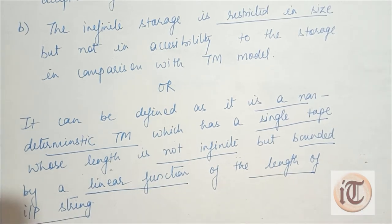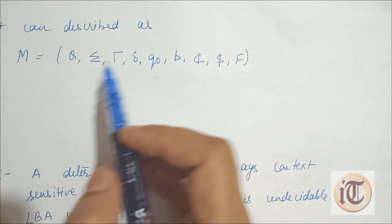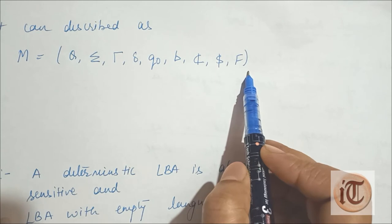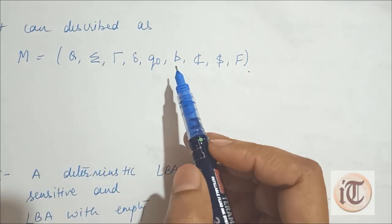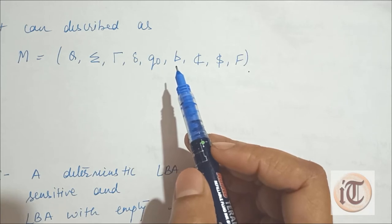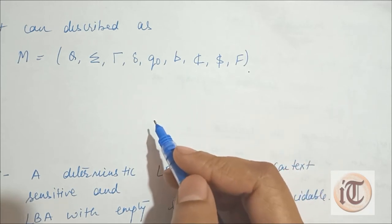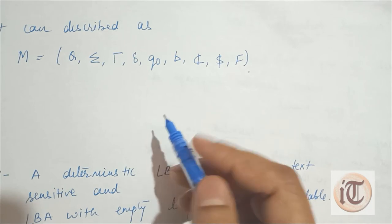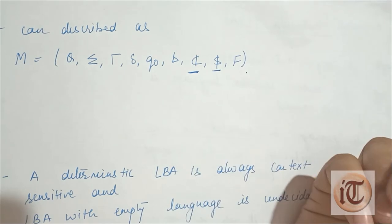If we have to define a linear bounded automata with the help of tuples, it can be described by these tuples. Some tuples are very similar to the Turing machine model, but the two distinct tuples in the linear bounded automata are one is this and another one is this.